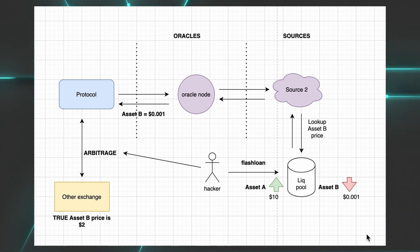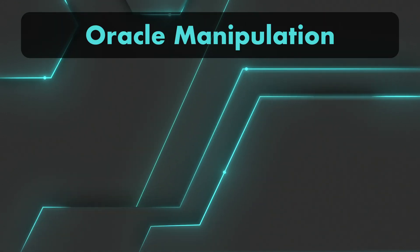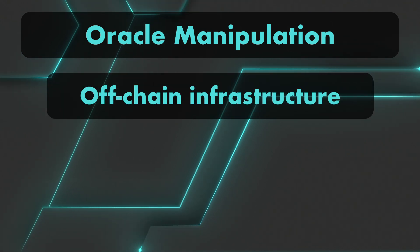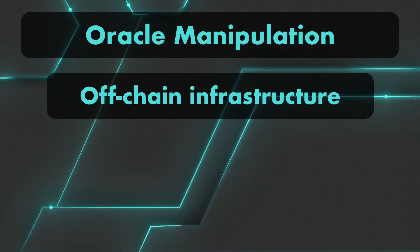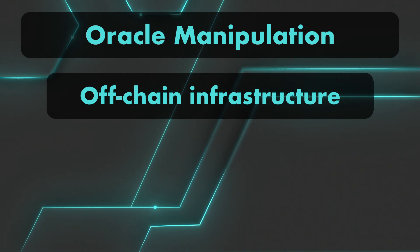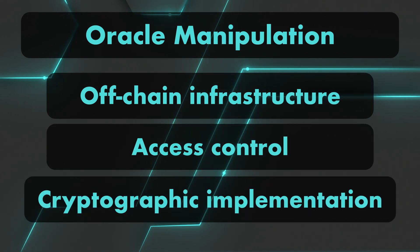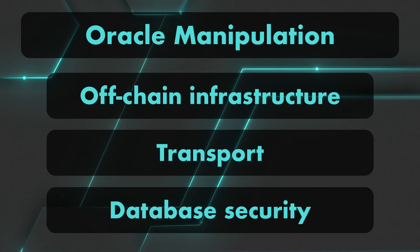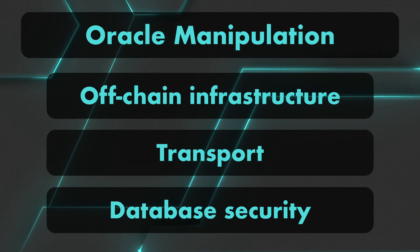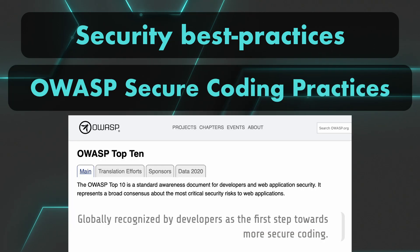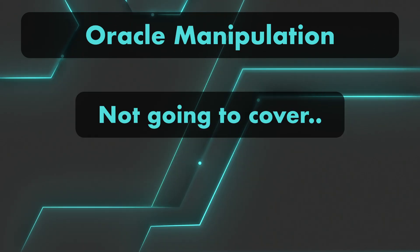That's the type of oracle manipulation most reported in the media — a DApp using a single price feed source smart contract and consuming the manipulated value without additional security checks. An oracle can also be tampered with directly via its off-chain infrastructure. Oracles require traditional software to run, which opens the door to attacks on access control, cryptographic implementation, transport, and database security. That's why software providing oracle services must be hardened and adhere to security-based practices such as the OWASP secure coding practices.